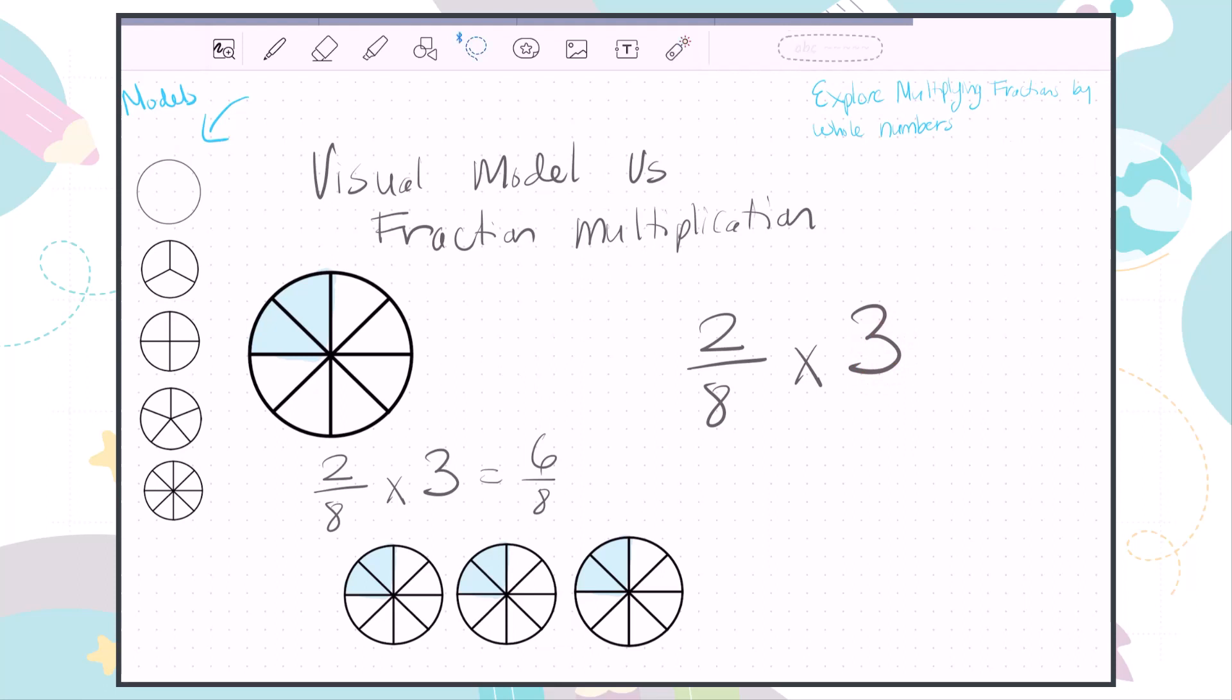I'm going to take that three—that three wholes—and I'm going to shrink it down a little bit and turn it into a fraction. Now, any whole number over one is the fraction representation of that number. Three wholes: three divided by one, three wholes.